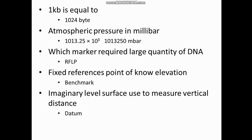Atmospheric pressure in millibar is 1013.25 into 10 raised to 3, which is 1013250 millibar. The marker that requires a larger quantity of DNA is RFLP - Restriction Fragment Length Polymorphism - which requires a large quantity of DNA to assess. A fixed reference point of known elevation is called a benchmark.